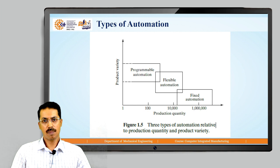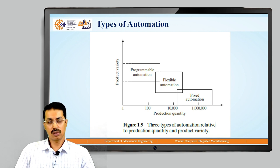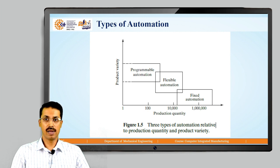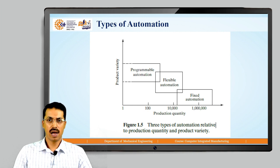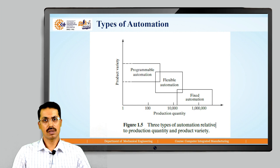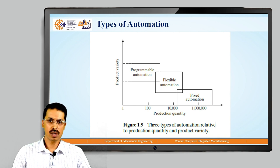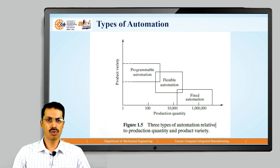If production quantity is higher and variety is lower — only one type of product, mass production — we go for fixed automation. If variety is at the higher side and production quantity is at the lower side, we go for programmable automation. In between, with medium production variety and medium production quantity, we go for flexible automation. So: low variety high quantity → fixed automation; high variety low quantity → programmable automation; mid variety mid quantity → flexible automation.